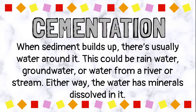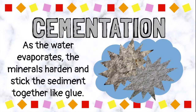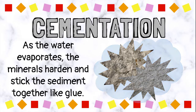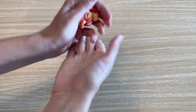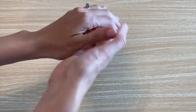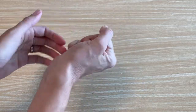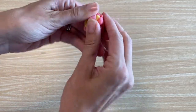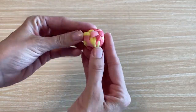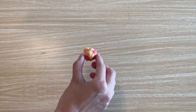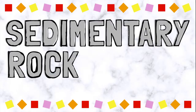Or water from a river or stream. Either way, the water has minerals dissolved in it. As the water evaporates, the minerals harden and stick the sediment together like glue. The sticky sugar in the starburst acts like the minerals in the water to stick our starburst sediment together into a sedimentary rock.